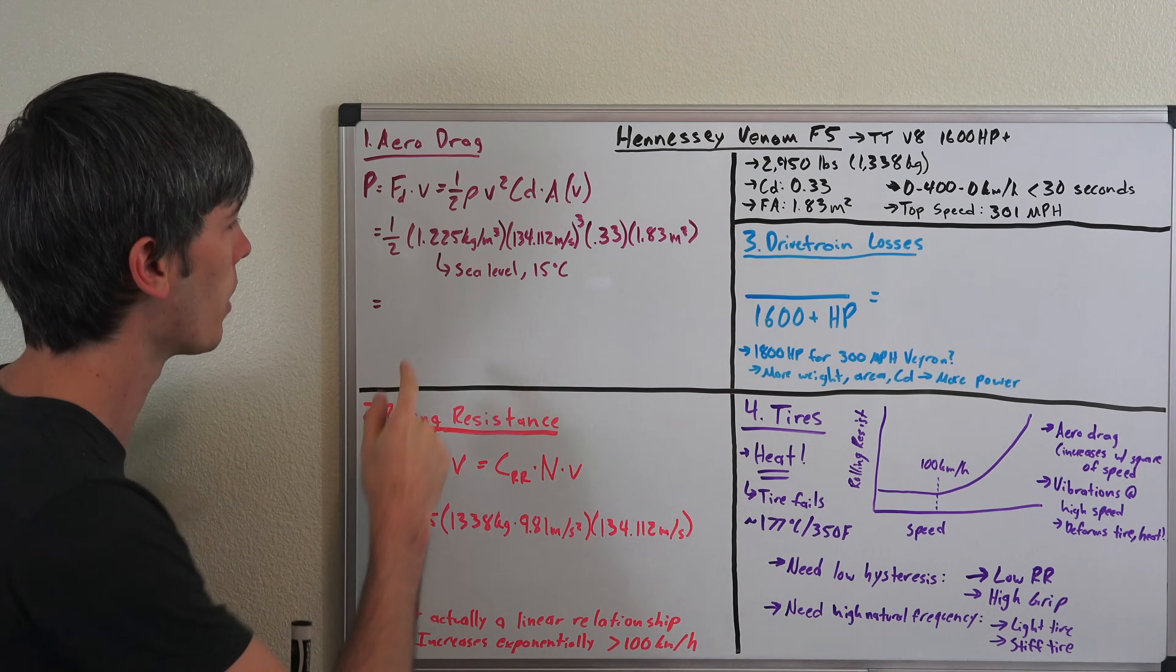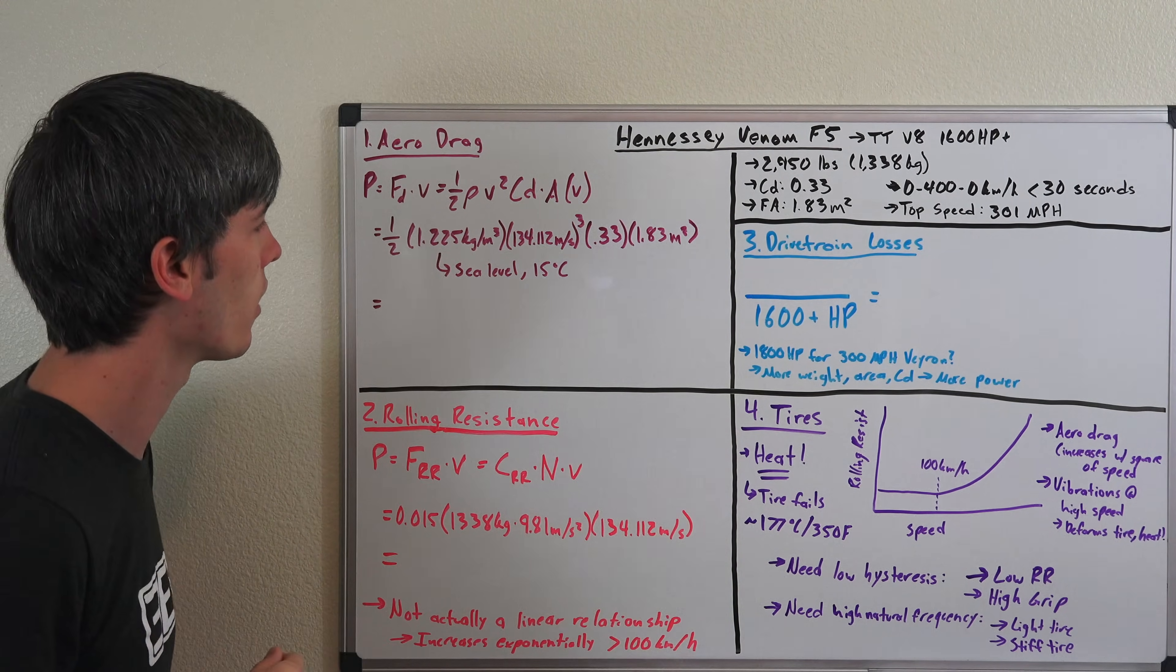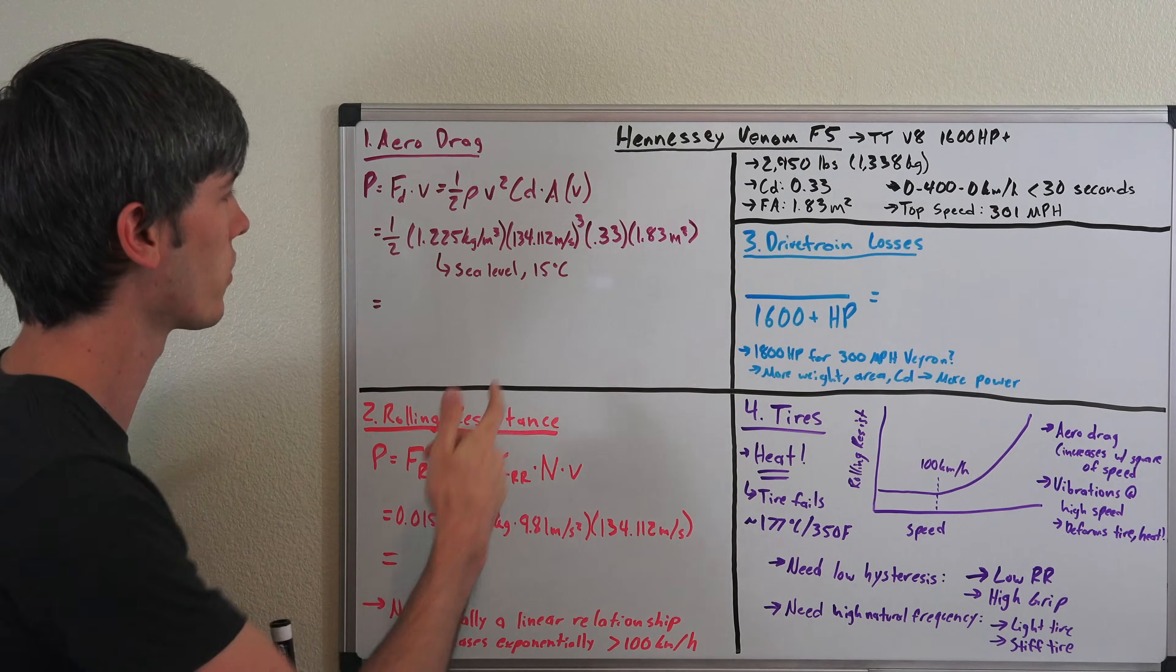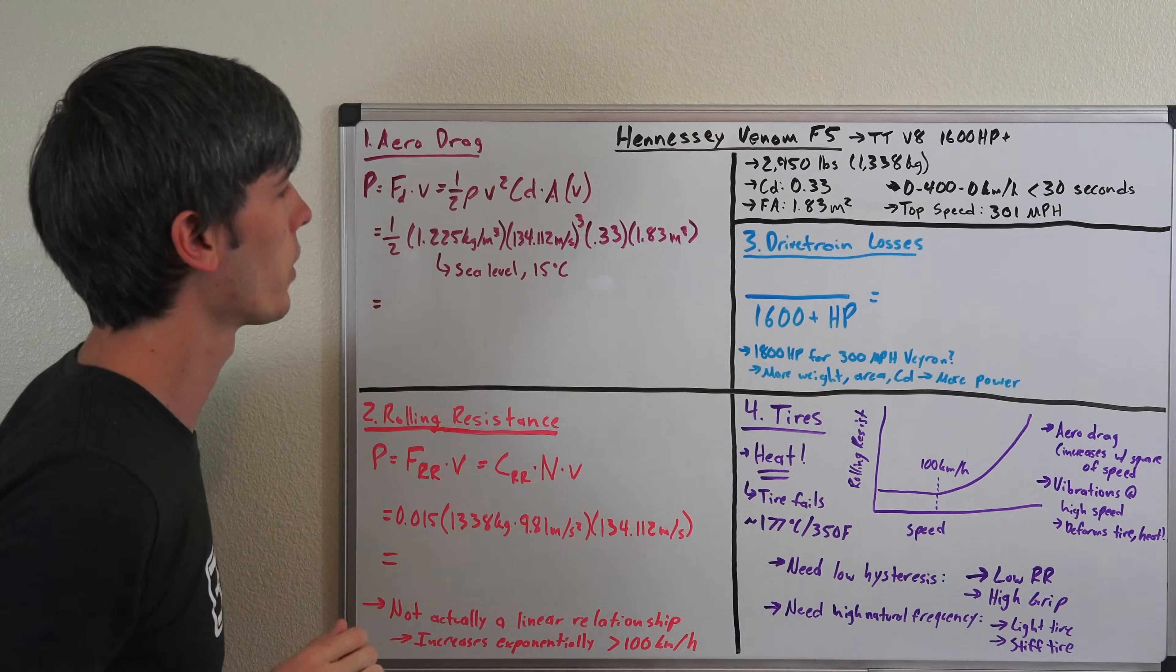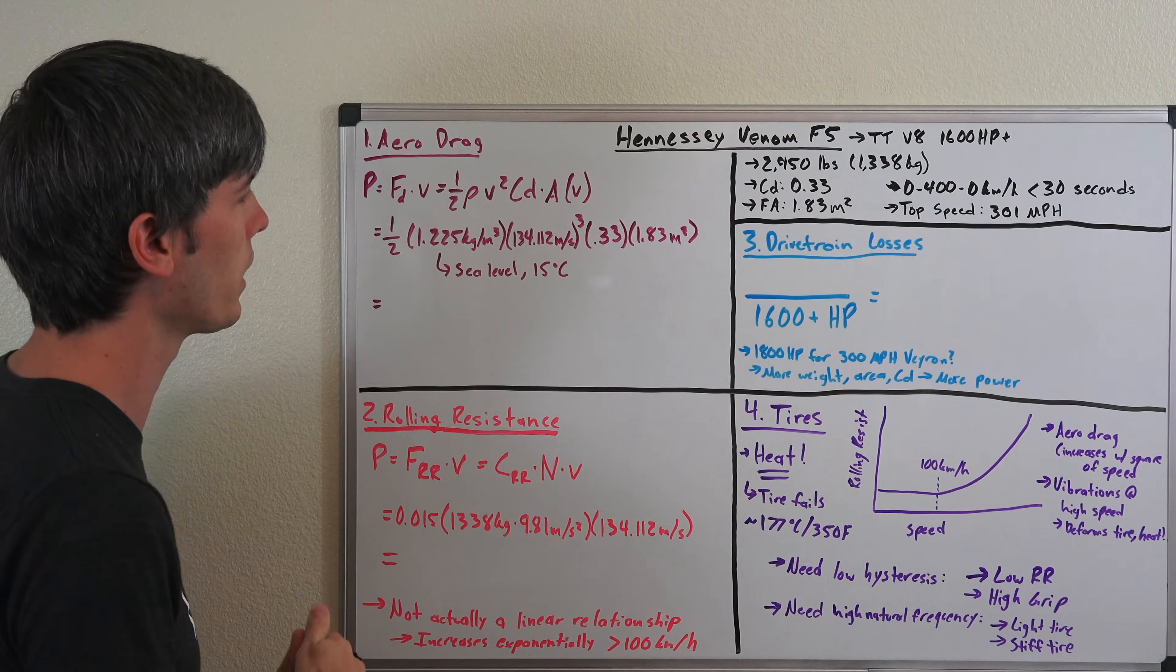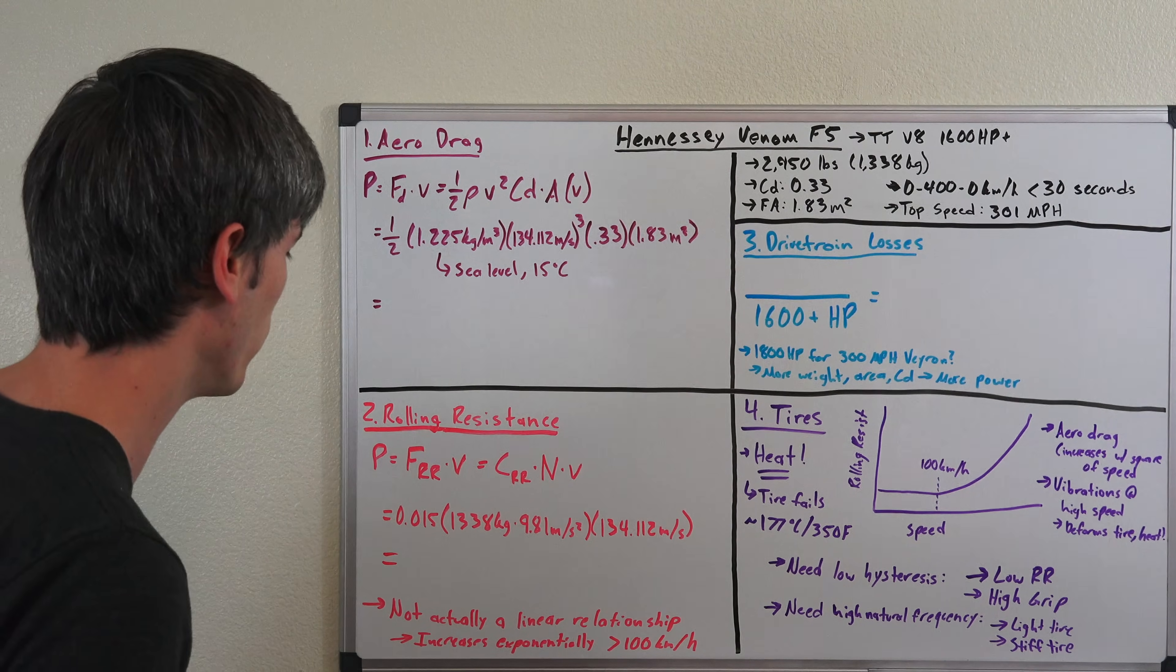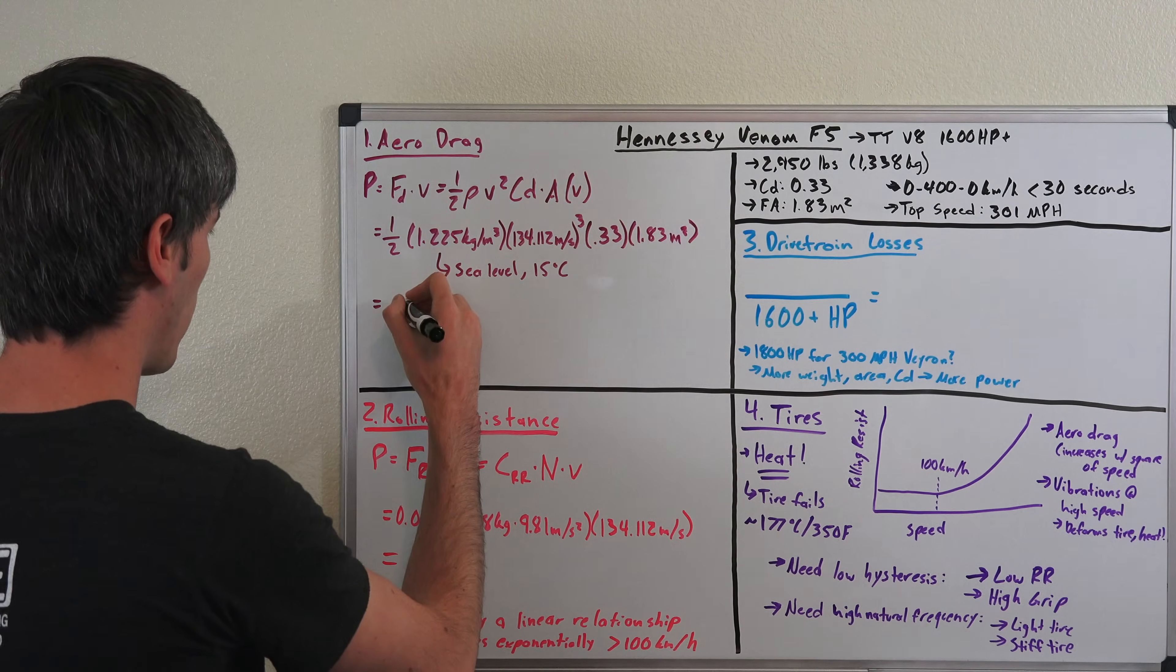That gives us one-half times 1.225 kilograms per meter cubed—that's the density of air at sea level at 15 degrees Celsius—multiplied by 134.1 meters per second cubed (that's the velocity we're traveling at, so we're taking V squared and multiplying also by V—V cubed). 134 meters per second is equivalent to 300 miles per hour. Multiplying that by 0.33 and then by the frontal area 1.83 meters squared. I'm sure all of you are very happy we're using metric units here for the most part.